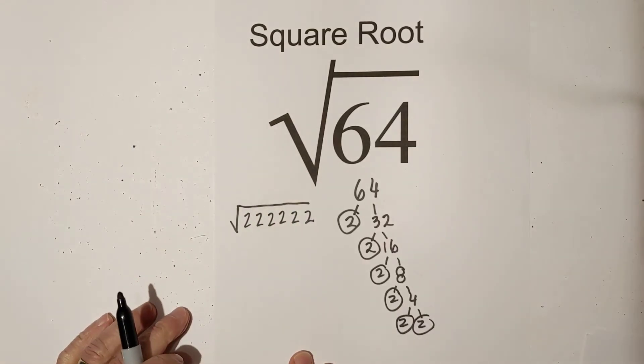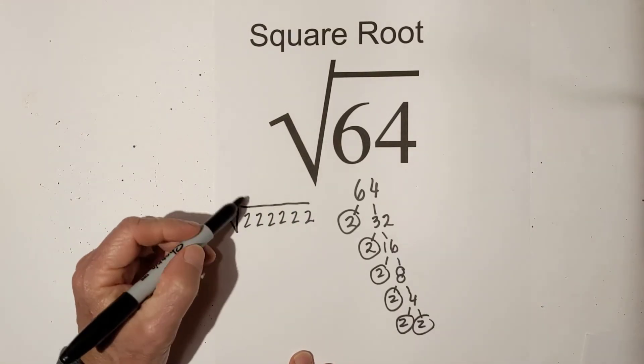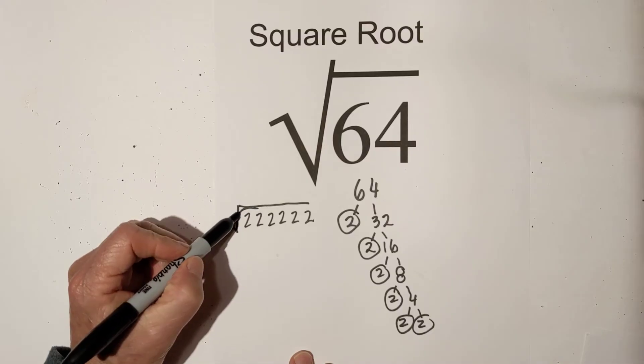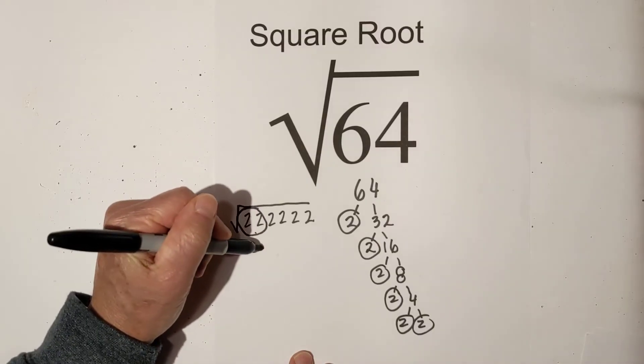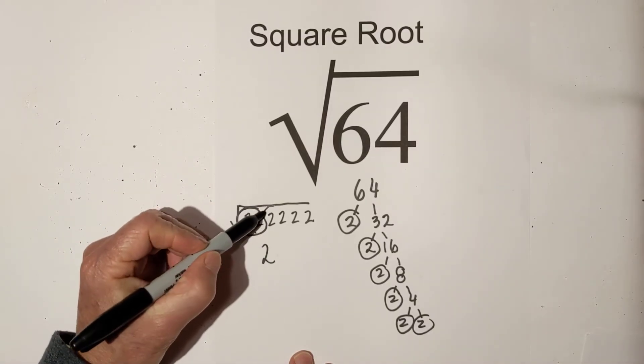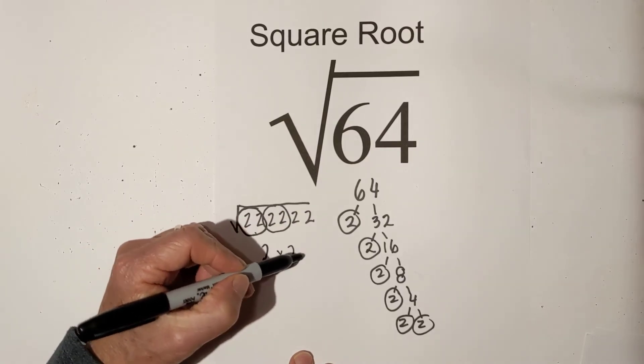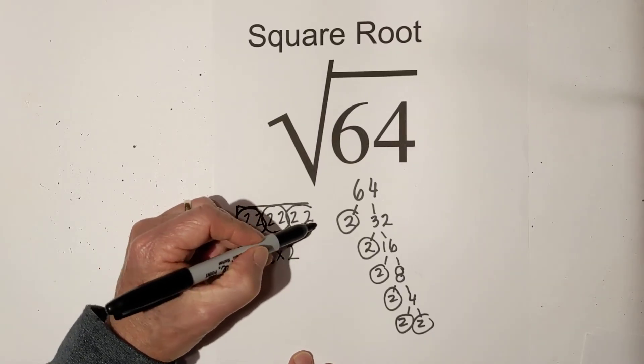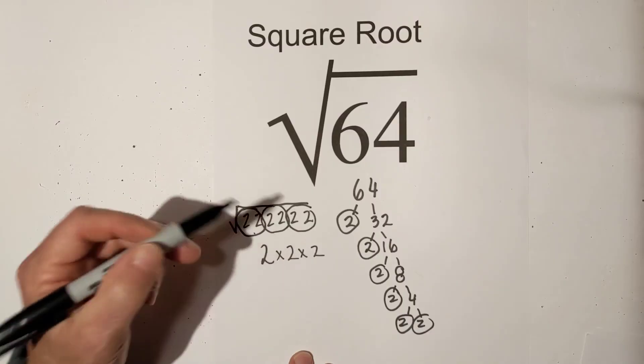And since it is a square root, we will take out pairs. So I have one pair that I can take out. That's 1, 2. And here's another pair I can take out. That's a second 2. And then I'll take out a third pair. And that's 2.